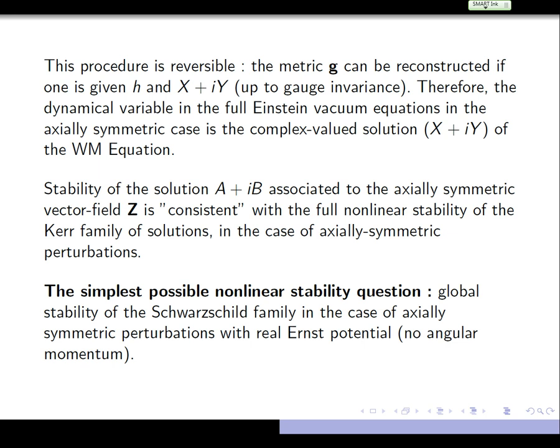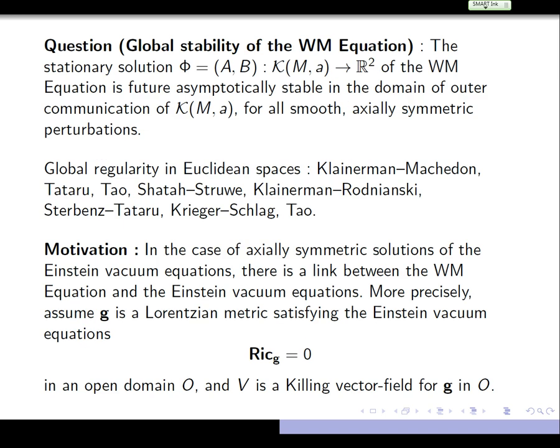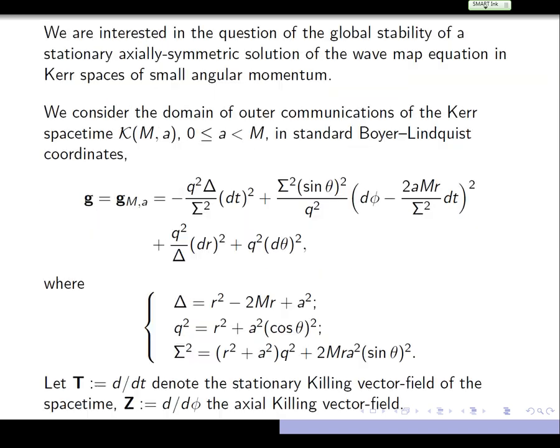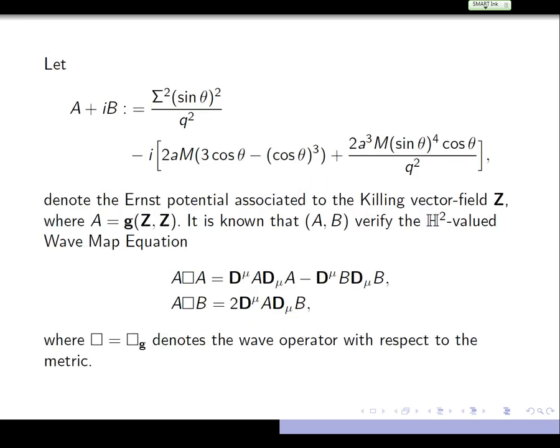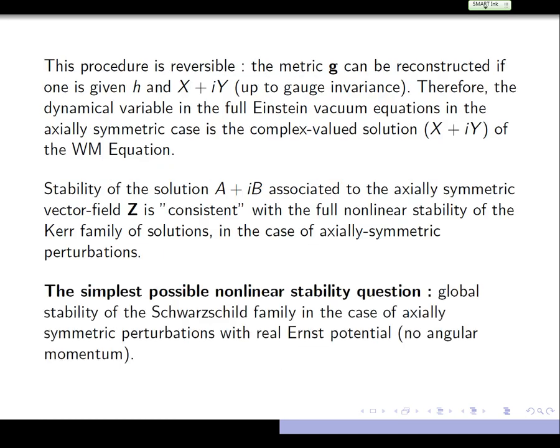The simplest possible nonlinear stability equation is to think of the stability of the Schwarzschild family in the class of axially symmetric perturbations with real Ernst potentials. If we look at the wave map equation again, if B starts out being zero, then B would stay zero for all time — so everything is stable as long as the Ernst potential starts out at zero, and this coincides with the stability of the Schwarzschild family.